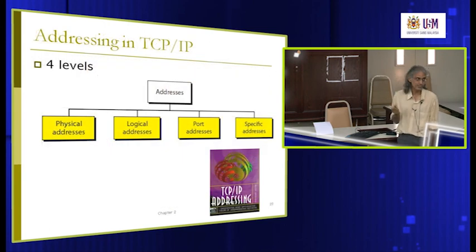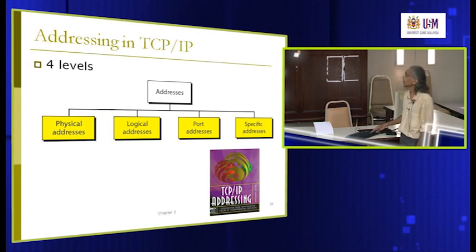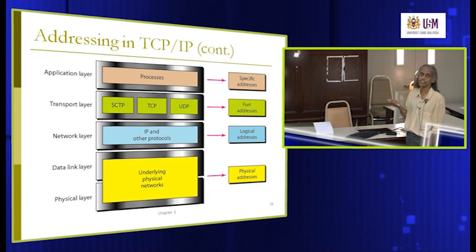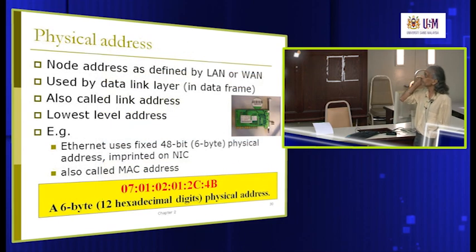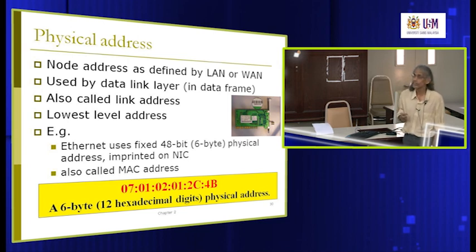TCP/IP has four levels of addresses, compared to OSI's three (MAC address, IP address, port address). TCP/IP adds one extra: the specific address. Physical address is at the bottom, logical address at the internet layer, port address at the transport layer, and specific address is application-specific. Physical address is the fundamental address for each connection — defined by the LAN or WAN type. For example, Ethernet uses a 48-bit MAC address, normally printed on the card itself and fixed by the manufacturer.